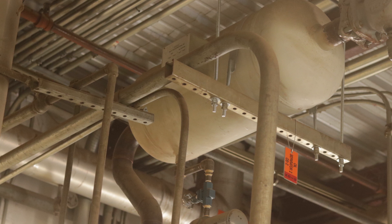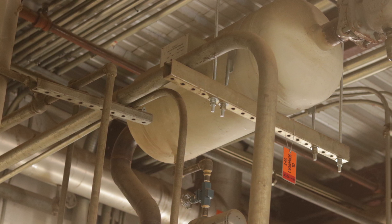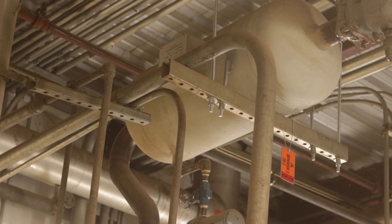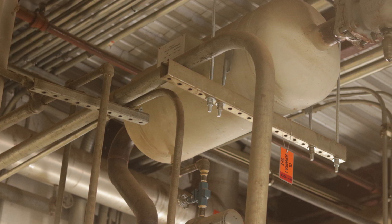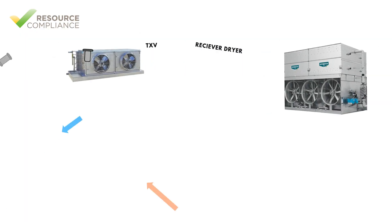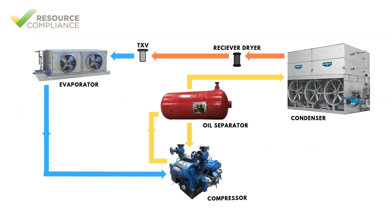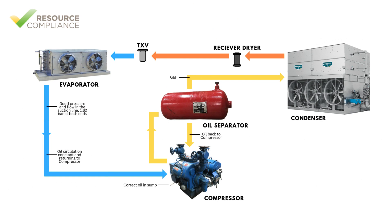Most compressors are configured with an oil separator downstream of the compressor. An oil separator is a vessel that is specially designed to separate any oil in the discharge vapor and return it back to the compressor where it is wanted.